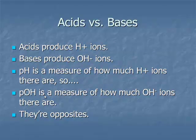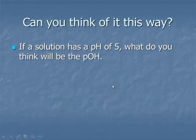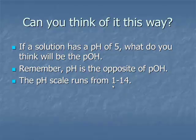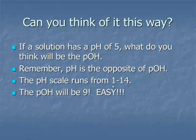Acids produce H+ ions. Bases produce OH- ions. pH is a measure of how much H+ ions there are. There's also something called pOH, which is a measure of how many hydroxide ions there are. pH and pOH are total complete opposites. If a solution has a pH of 5, the pOH would be 9. The scale runs to 14, so 14 minus 5 equals 9.